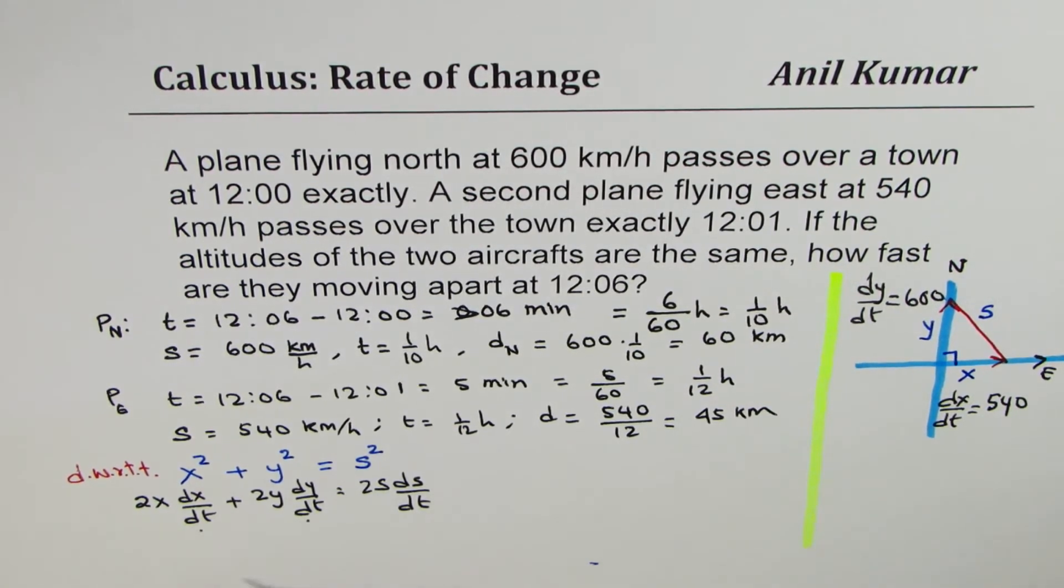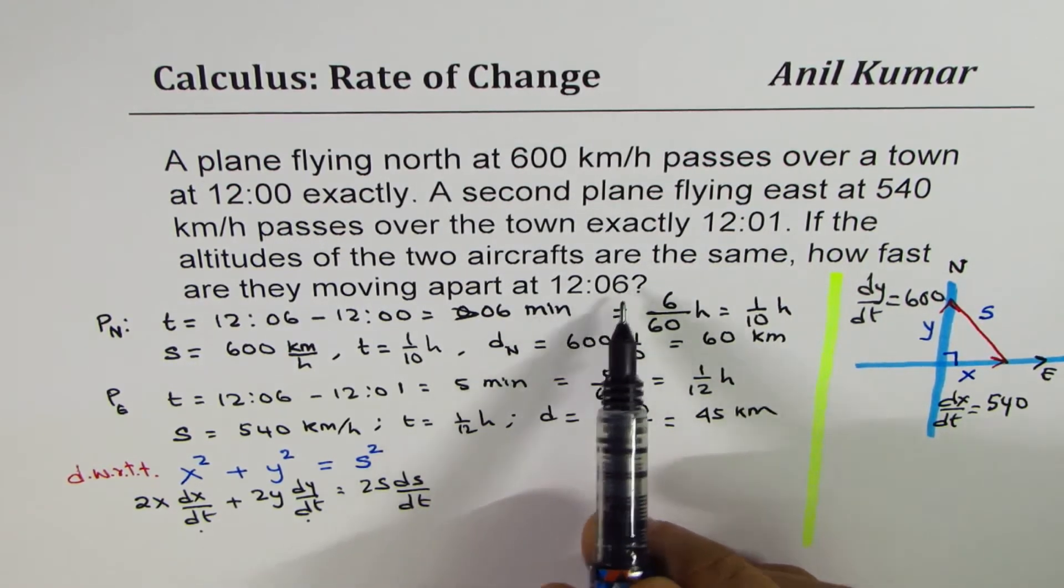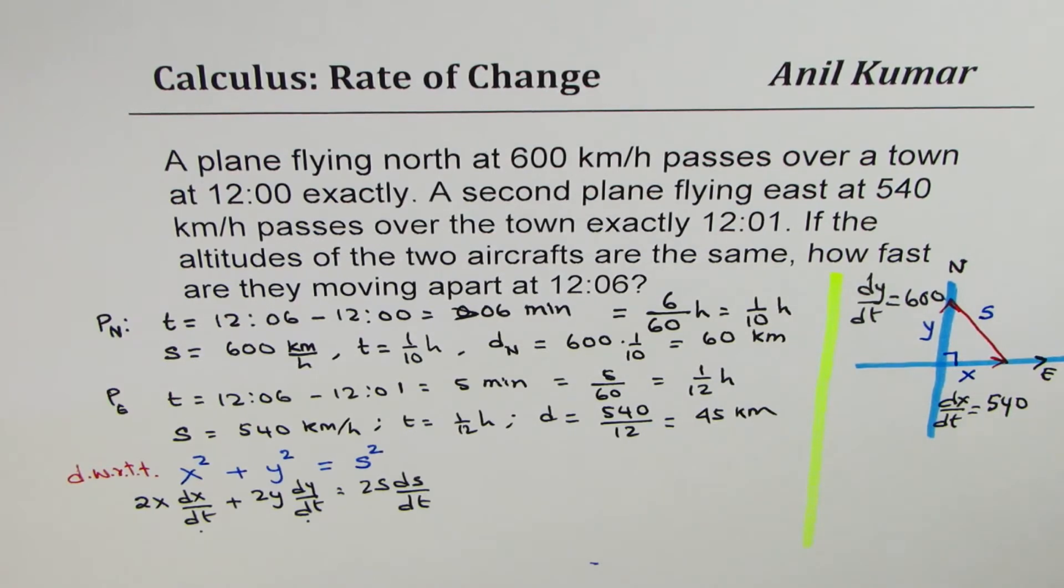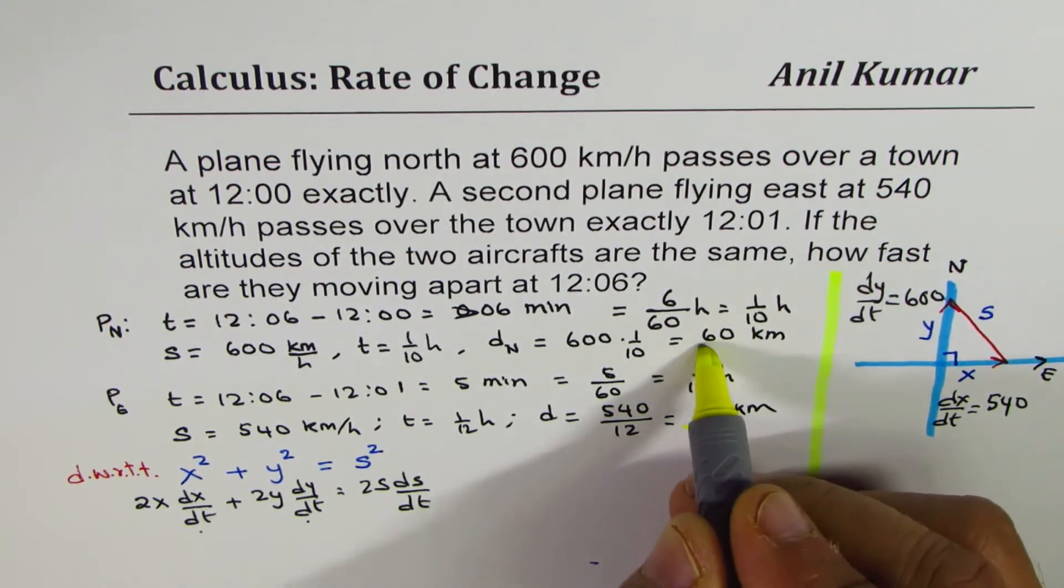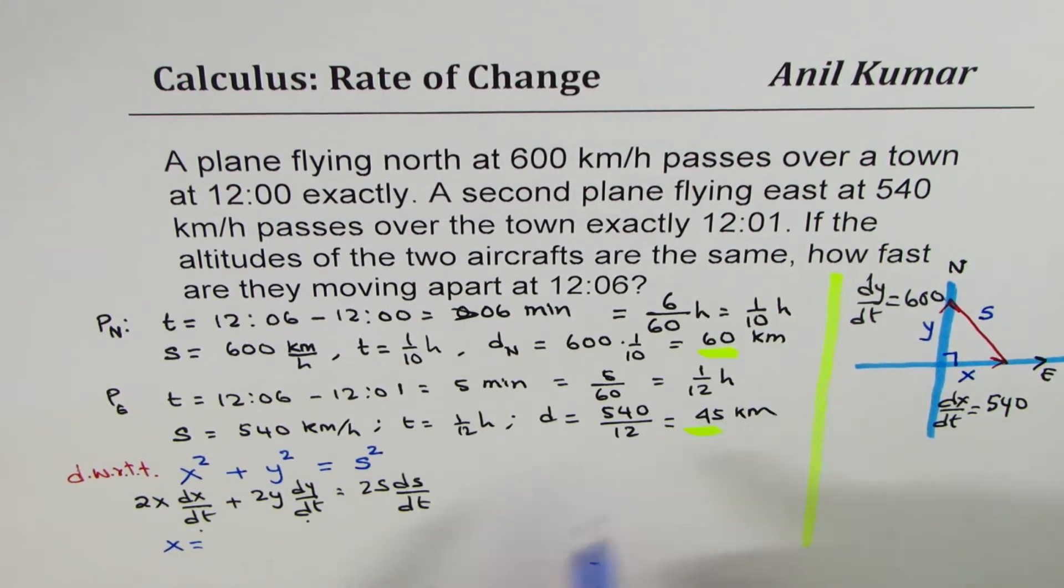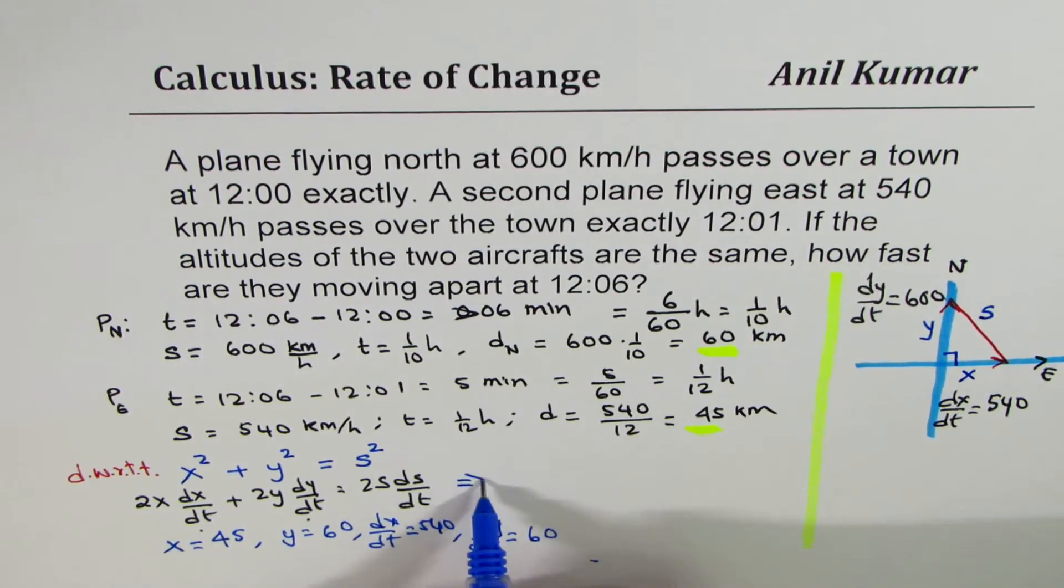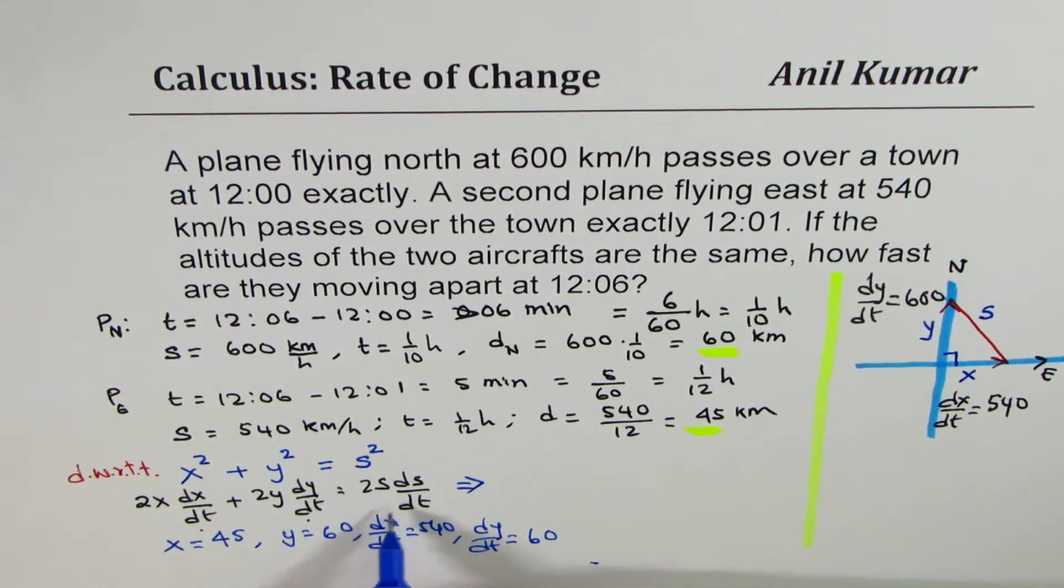And we want to know their separation at 12:06. So at 12:06 we have also calculated the distances, that is X and Y values. So in the given situation, what we know is that X is equal to 45, Y is equal to 60, dX/dt equals to 540, and dY/dt is equal to 600. We can place these values and simplify.